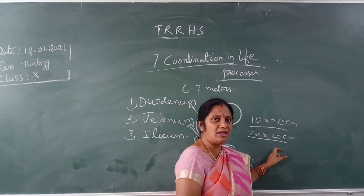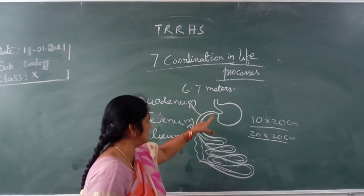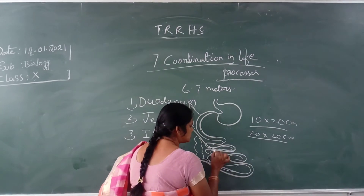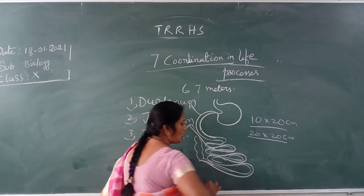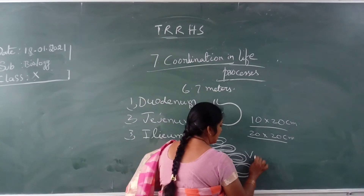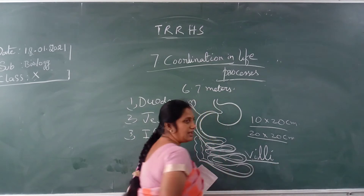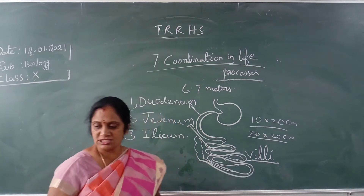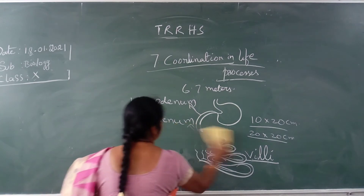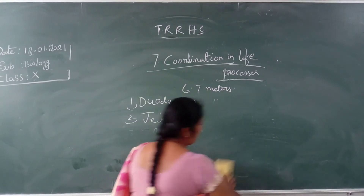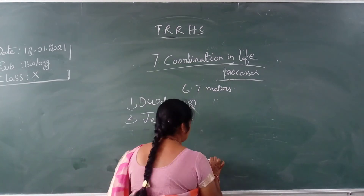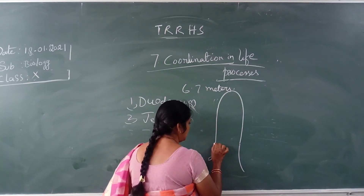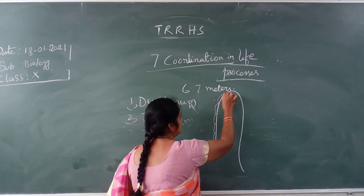In the same way, in our abdominal cavity, the intestine contains many finger-like structures. These finger-like structures are called villi. Villi is the plural form, and villus is the singular form. If you see the structure of a villus, each villus contains a layer of epithelial tissue.